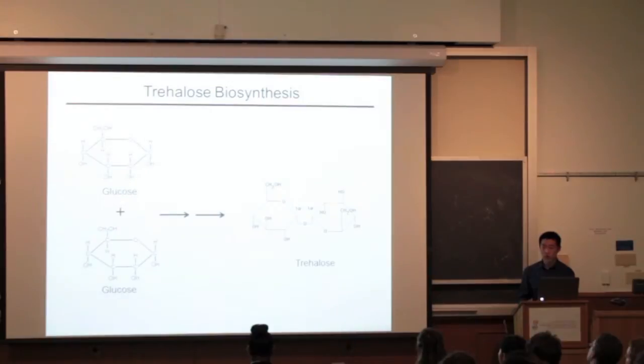Yeast are able to synthesize trehalose from glucose. This process requires a couple of different enzymes. For this purpose, I focused on the enzyme TPS1, trehalose 6-phosphate synthase.